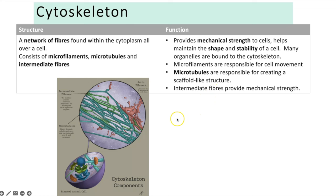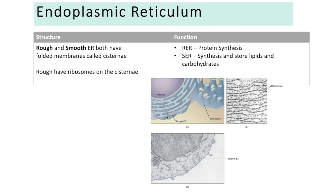The endoplasmic reticulum comes in rough and smooth types; both have folded membranes called cisternae. The rough ER has ribosomes attached on the outside, so its function is protein synthesis. The smooth ER's function is to synthesise and store lipids and carbohydrates.